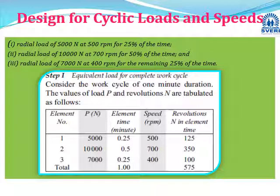n1 = 500 × 0.25 = 125 revolutions. The logic: 500 rpm for one quarter minute gives 125 revolutions. Similarly, n2 = 700 × 0.5 = 350, and n3 = 400 × 0.25 = 100. Therefore N = n1 + n2 + n3 = 575. So p1 = 5000, p2 = 10,000, p3 = 7000, n1 = 125, n2 = 350, n3 = 100, and N = 575.